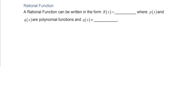A rational function can be written in the form r of x equals p of x divided by q of x, where p and q are polynomial functions and q is not equal to zero.